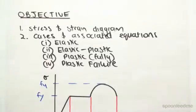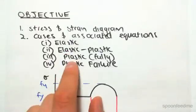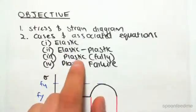Hey guys, the objective of this video is to look at the typical stress-strain diagram for a steel coupon. We're then going to be looking at different cases and their associated equations for elastic, elastic-plastic, plastic which is fully plastic, and plastic failure.